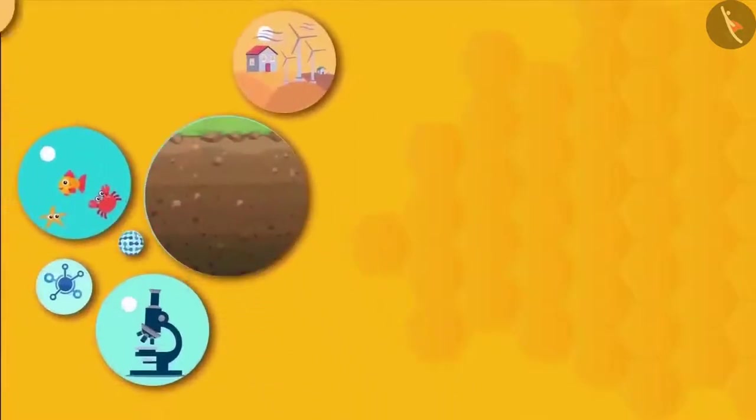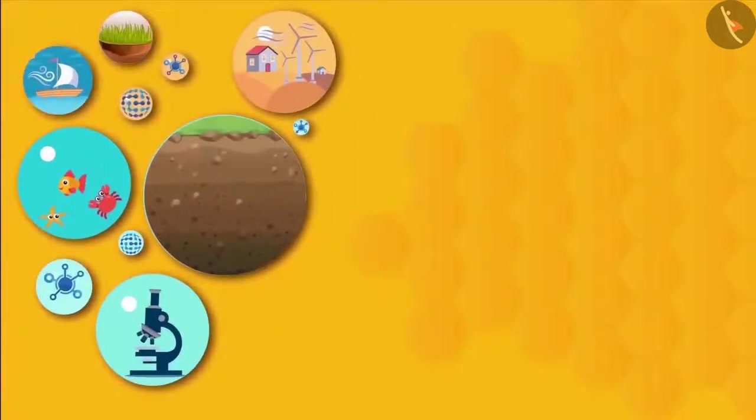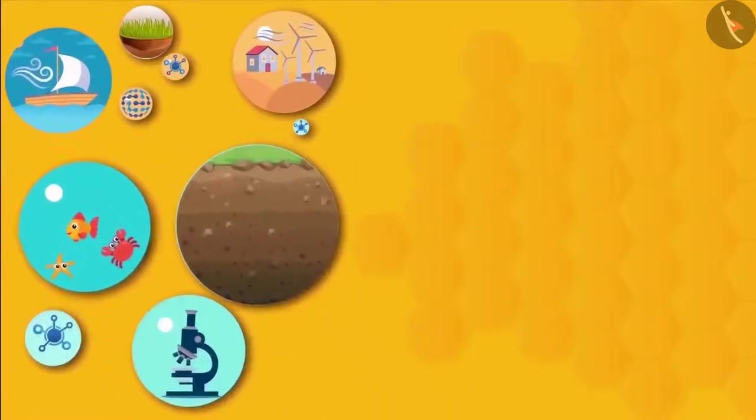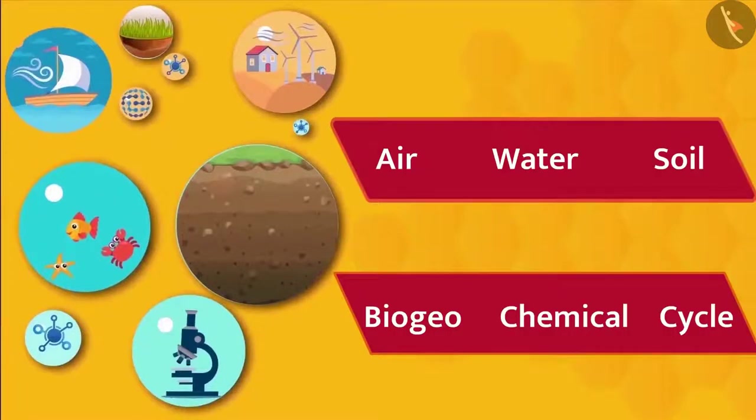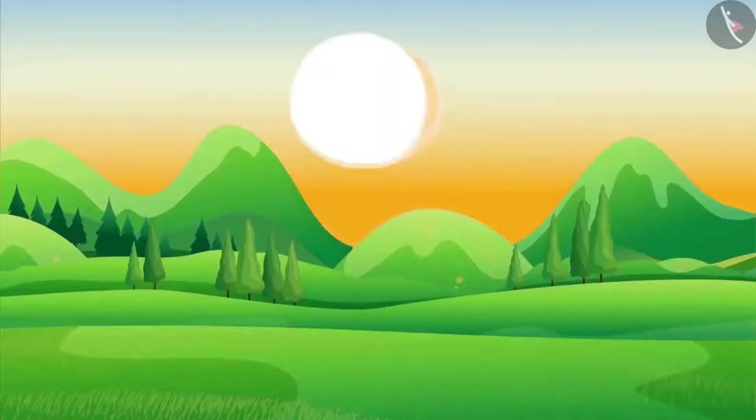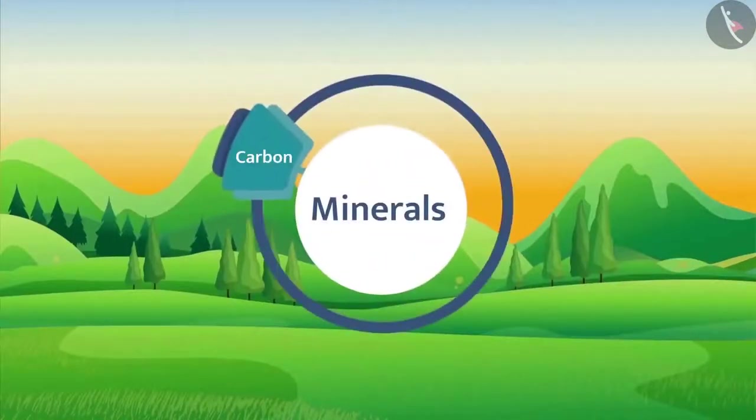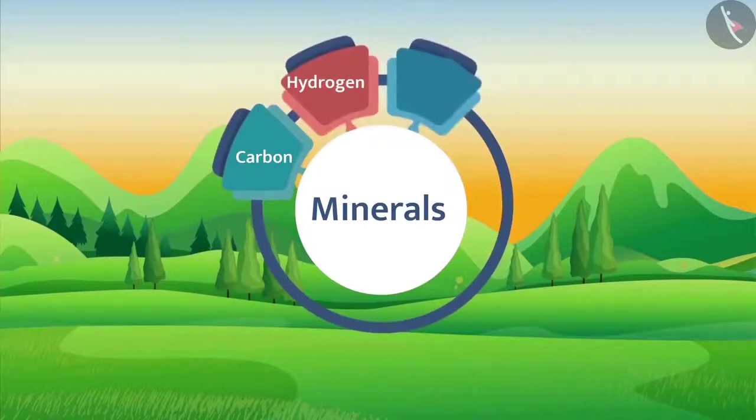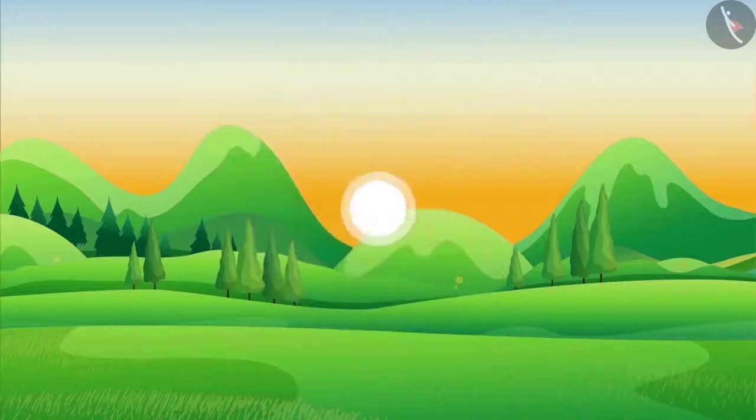Hello everyone, welcome back. Earlier you learned about air, water, and soil. In this video, let's understand the biogeochemical cycles taking place in the air, water, and soil. Friends, do you know what kind of minerals are found on the earth? Minerals such as carbon, hydrogen, oxygen, and nitrogen are found on the earth. Do you know these minerals are found in a constant amount in the atmosphere?